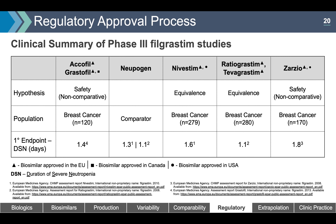In Phase 3 trials for biosimilar filgrastim: Nivestim and Ratiograstim used randomized equivalence studies, while Grastofil and Zarzio used safety studies compared to historical clinical trials of filgrastim. Note the similarity in the highly sensitive endpoint — duration of severe neutropenia — with a range of 1.1 to 1.8 days across trials.